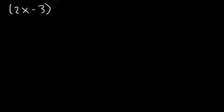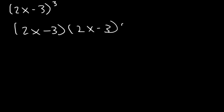Now, let's say if you were to see an expression like 2x minus 3 raised to the third power, and you want to expand and simplify. There are two techniques you can use: you can FOIL it three times, or you can use the binomial expansion. Let's FOIL it three times first, and then confirm that answer using the binomial theorem. So 2x minus 3 cubed is 2x minus 3 times itself a total of three times. Just multiply two of them at a time.